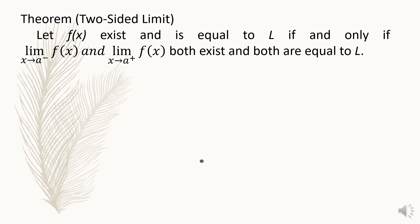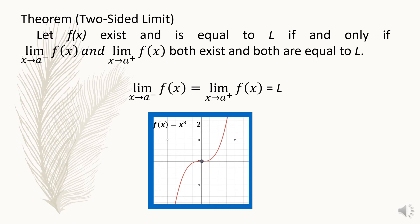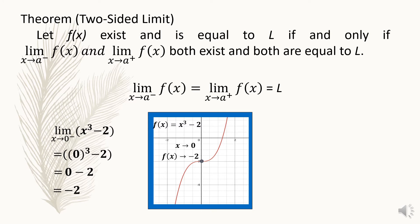Two-sided limit theorem: the limit of f of x exists and is equal to L if and only if the limit of f of x as x approaches a from the left and the limit of f of x as x approaches a from the right both exist and are both equal to L. Now consider the graph of f of x = x³ − 2. The left-hand limit as x approaches 0 from the left: substituting x = 0 gives x³ − 2 = −2. So as x approaches 0, f of x approaches −2.